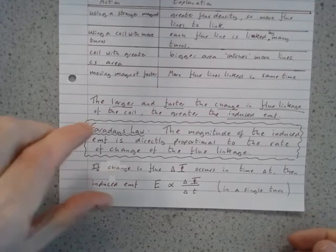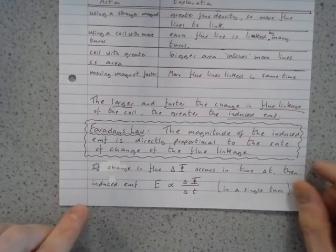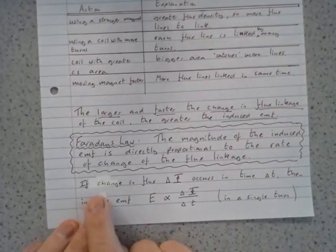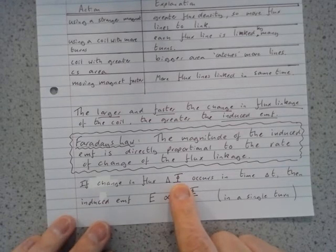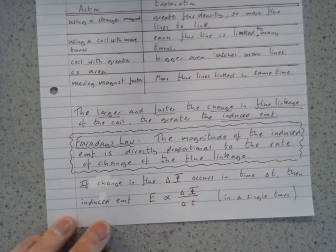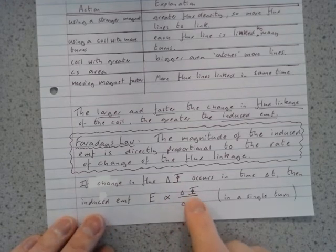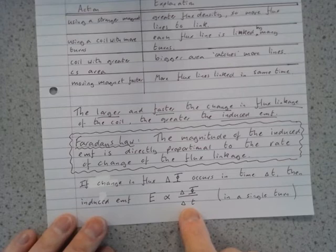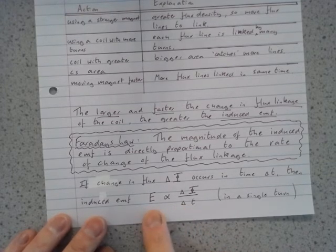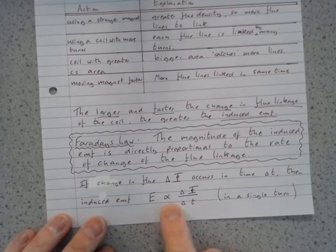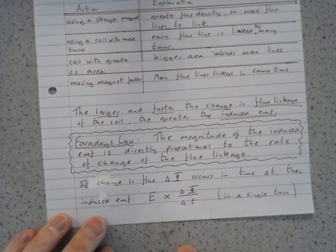We can turn Faraday's law directly into an equation which is at the bottom of the page here. If we measure flux using the symbol phi, which we did last week, a change in flux is delta phi, a rate of change in flux is delta phi over delta T. And if we use E to denote EMF, then Faraday's law says that E is proportional to delta phi divided by delta T.